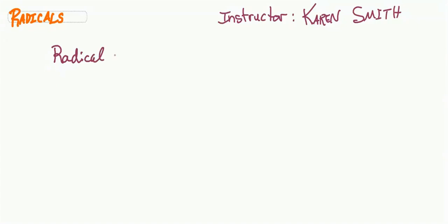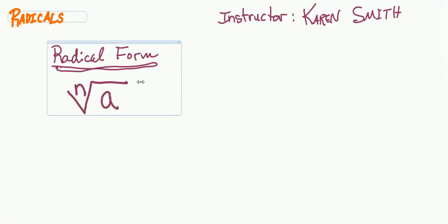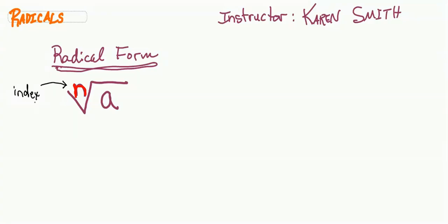Let's talk about the radical form of an expression — we're talking about just a single term. Radical form will look something like this: the nth root of a. The n is called our index, or you may say the root. It's the index for the root we're going to take. So if I'm asking you to take the nth root of a, I'm asking: what number can I multiply times itself n times to get a? What was the base when it would have been in an exponent?